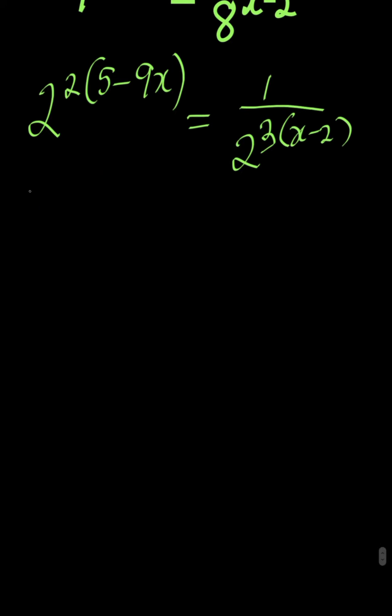So simplifying further, we have 2 to the power of 2 times 5 is 10, minus 2 times 9x is 18x, equals 1 over 2 to the power of 3 times x is 3x, and 3 times minus 2 is minus 6.